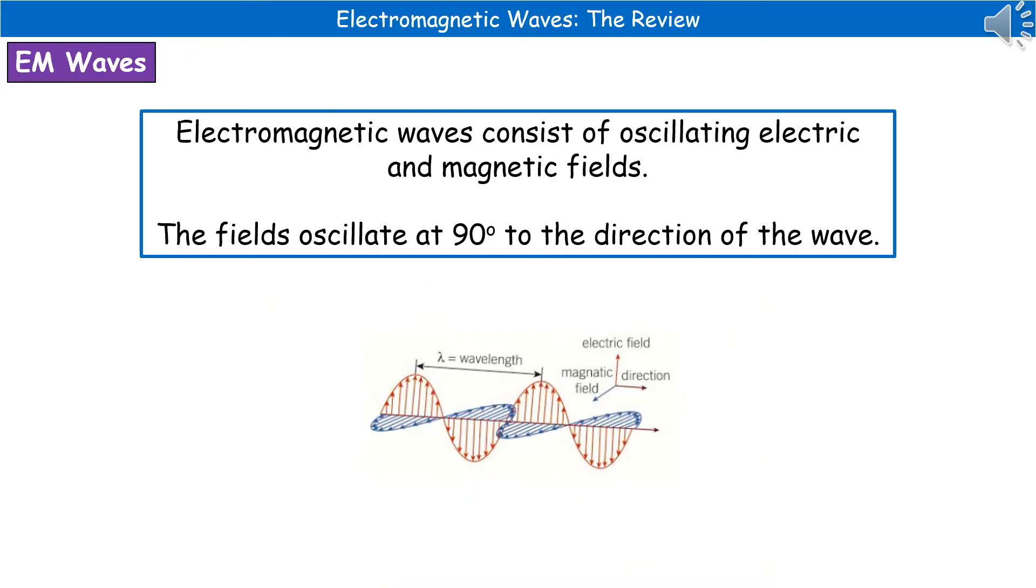So if we consider what we're talking about when we refer to these electromagnetic waves, quite simply, they consist of oscillating electric and magnetic fields. And these fields are going to oscillate at 90 degrees to the direction that the wave is traveling in. So if you look at the diagram at the bottom there, you can see that our wave is traveling from left to right on the screen. The electric field, which is the one in red, is at 90 degrees to the direction going above and below. And then the blue one represents our magnetic field, which is going into the screen and coming out towards us. Again, at 90 degrees, just in a different plane.